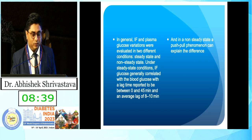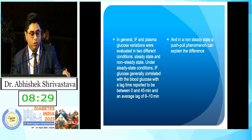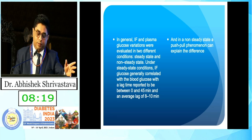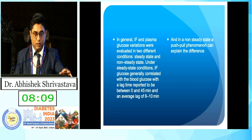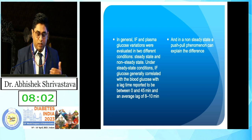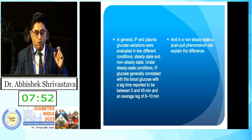Interstitial fluid and plasma glucose variations were evaluated in two different conditions: steady state and non-steady state. Under steady state conditions, interstitial fluid glucose generally correlates with blood glucose, with a lag time reported to be between 0 to 45 minutes. When using CGMS, there are certainly lag times in blood glucose reporting. This lag time in steady state — when a person is not exercising or not taking a heavy meal — varies between 0 to 45 minutes, with an average lag time of around 8 to 10 minutes.